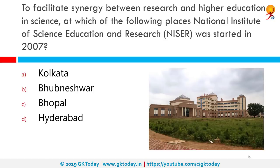To facilitate synergy between research, higher education and science, at which place was the National Institute of Science Education and Research started in 2007? That is Bhubaneswar, also known as NISER. It was founded by then Prime Minister Dr. Manmohan Singh and established in 2006 along the lines of the Indian Institute of Science in Bangalore and its sister institutions, the IISERs, established in Pune, Mohali, Kolkata, Bhopal, Berhampur, Tirupati, and Thiruvananthapuram.